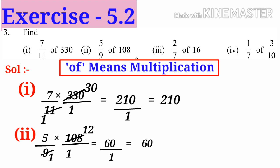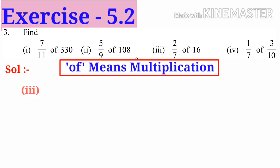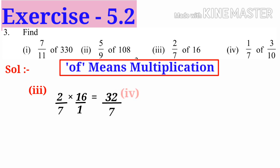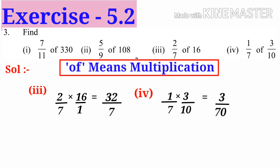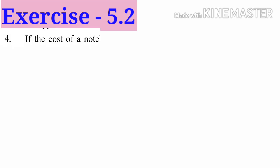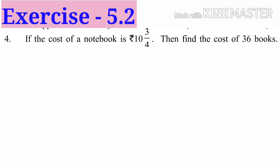Third problem: 2/7 × 16/1 = 32/7. Fourth problem: 1/7 × 3/7 × 3/10. That is 1 × 3 = 3 in the numerator, 7 × 10 = 70 in the denominator, so 3/70.